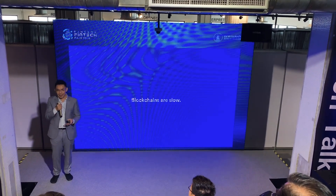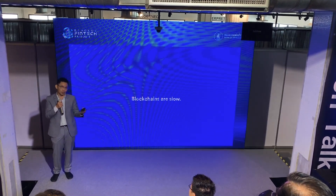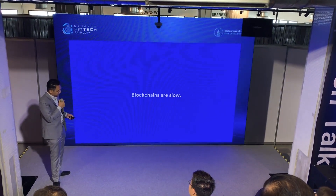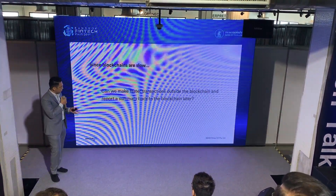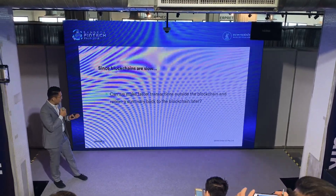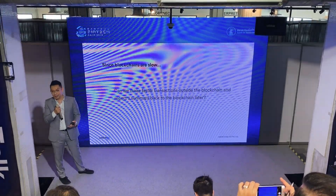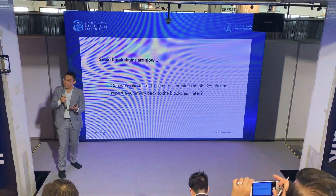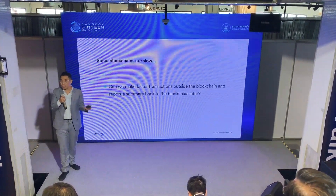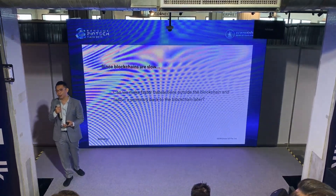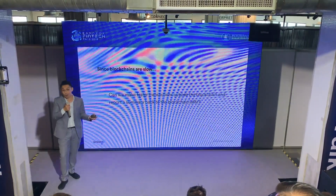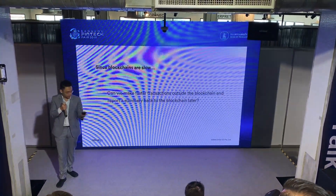So can we make faster transactions outside the blockchain and report a summary back to the blockchain periodically? The real-world model of this is something like your credit card. You think of your bank account or regular banking system as layer one, and your credit card as layer two. You can use those actions on your credit card more frequently and faster, and then periodically you settle back to layer one — you settle back to the bank.